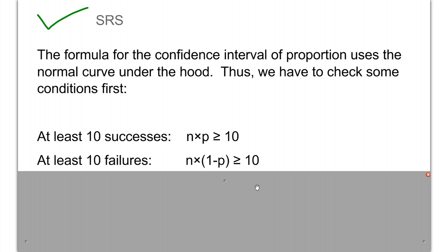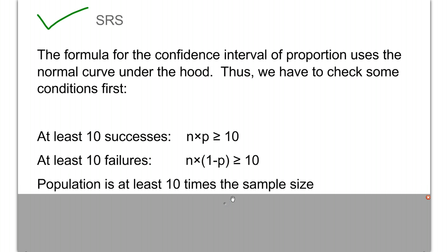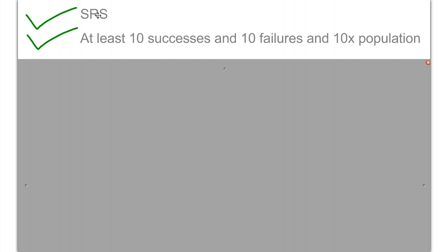You also need 10 failures — 10 people who said no. Same idea: N times (1 minus P), the probability of failure, has to be at least 10. Finally, your population needs to be at least 10 times the sample size. This is an assumption we tend to break in classroom simulations, where we might take a sample of 8 from a class of 24 — severely breaking the assumption. In general, it's always safe when you have a much larger population than your sample size.